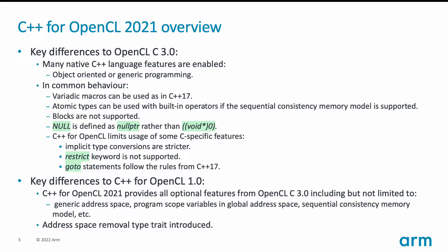But in common behavior, there are also differences. For example, we lift the restrictions on the use of variadic macros, and we also lift restrictions on the use of built-in operators with atomic types, as long as sequential consistency memory model is supported on the target, because this is simply the default consistency model for the C++ standard.